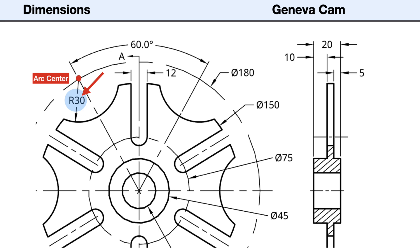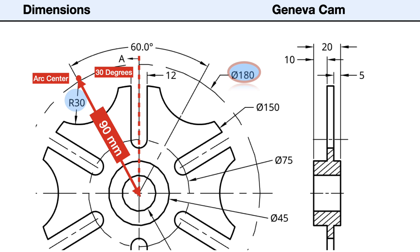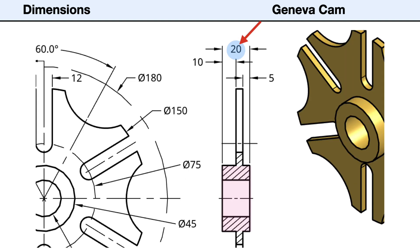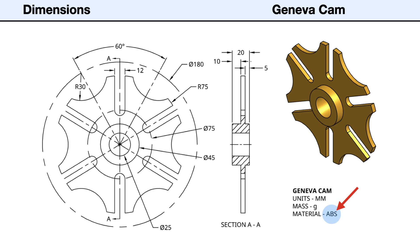The outer arc has a radius of 30 millimeters. Its center point is the intersection of two construction lines: a centerline circle with a diameter of 180 millimeters, and a construction line that extends from the center at an angle of 30 degrees from vertical, or 90 millimeters from the center. The center hub has a diameter of 45 millimeters and the center hole a diameter of 25 millimeters. The center hub has a total thickness of 20 millimeters and extends 10 millimeters from the front face of the plate and 5 millimeters from the back face. The thickness of the circular plate is 5 millimeters. The material is ABS plastic.